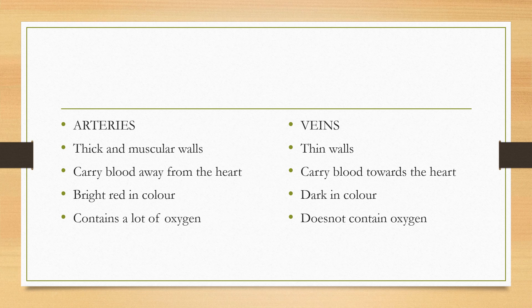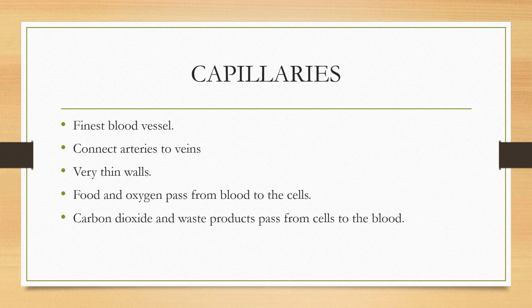Veins carry blood towards the heart — just the opposite of arteries. They are dark in color and they do not contain oxygen. Capillaries are the finest blood vessels. They connect arteries to veins and have very thin walls. At the capillaries, food and oxygen pass from blood to the cells.